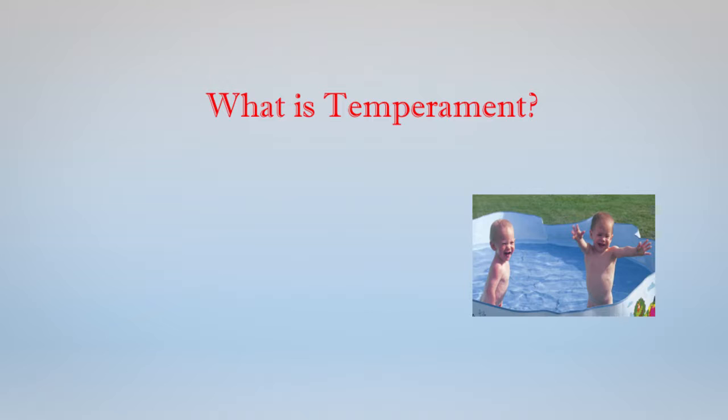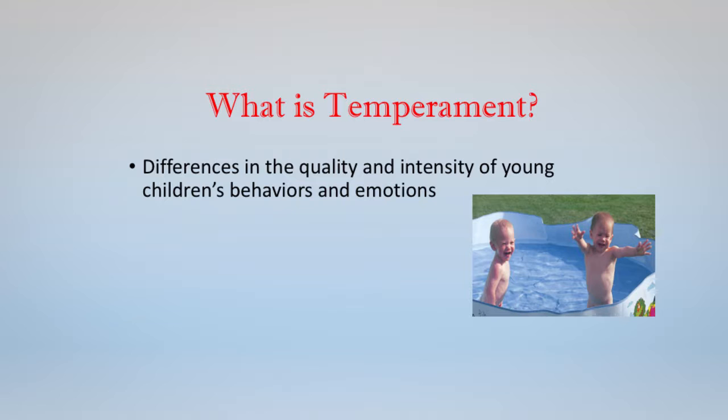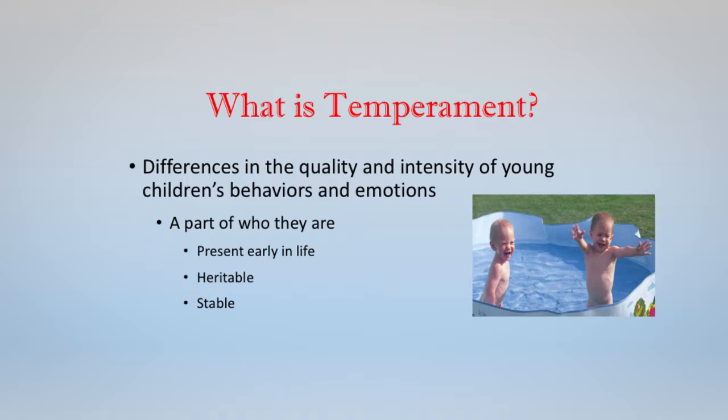I'm going to talk about a term used in the developmental literature called temperament. What do we mean by temperament? Temperament is the quality and intensity of young children's behaviors and emotions. We know it's present early in life. We know from studies of identical and fraternal twins that it appears to be highly heritable. And we also know that it's stable — that children with a particular temperament retain that temperament over time. Indeed, there's good reason to believe that temperament forms the basis of adult personality.